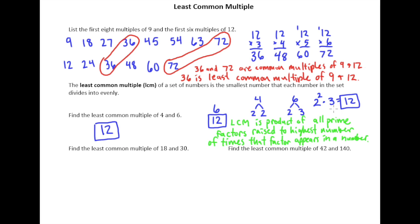It's fully understandable to say: why would I ever do this prime factorization process when I could have just made a list? For the numbers 4 and 6, I completely agree — just make the list and you'll quickly get the answer. But the larger your numbers are, the more likely you'll want to use this process, and I promise you'll get used to it.